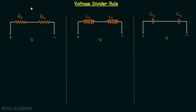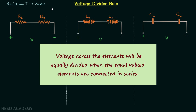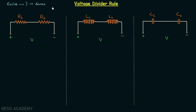We have completed our discussion on series and parallel combination of resistors, inductors and capacitors. Now we are going to have a discussion on the voltage divider rule in case of resistors, inductors and capacitors. We know that when we have a series combination of elements, the current through all the elements remains the same but the voltage across the elements are different, and we can calculate the voltage across individual elements using the voltage divider rule.